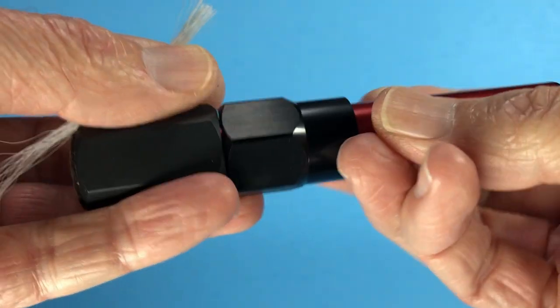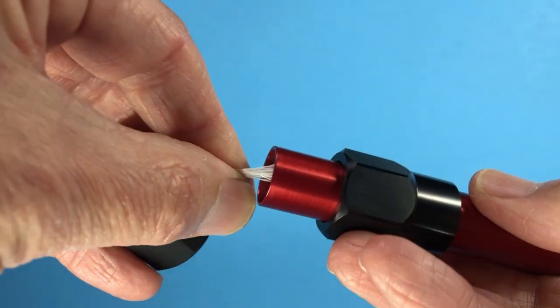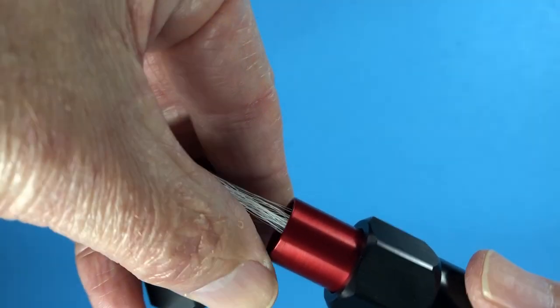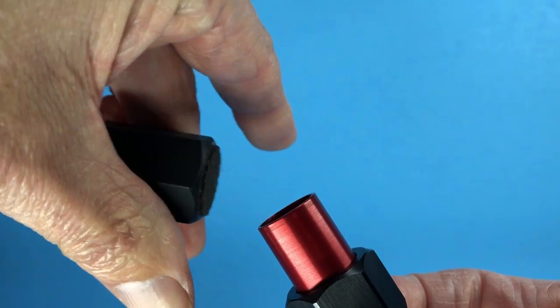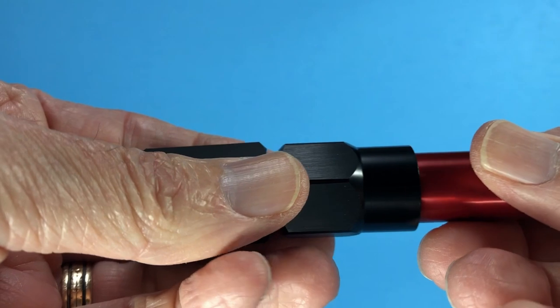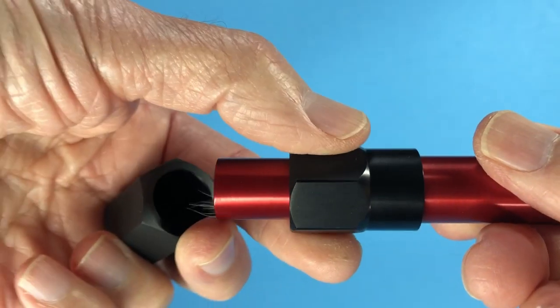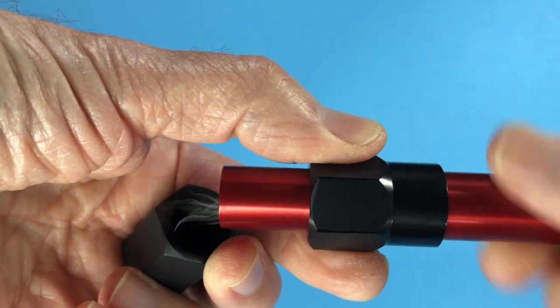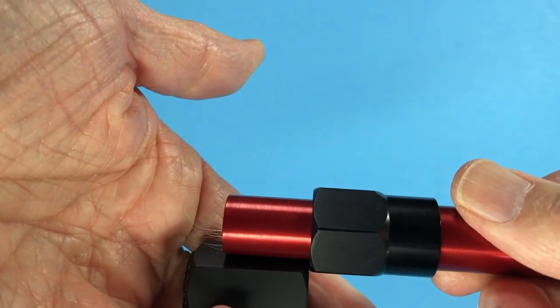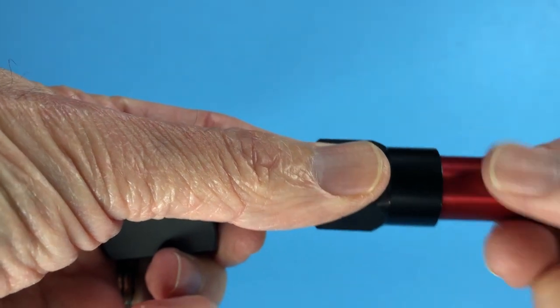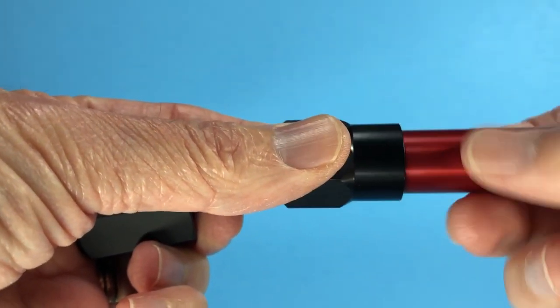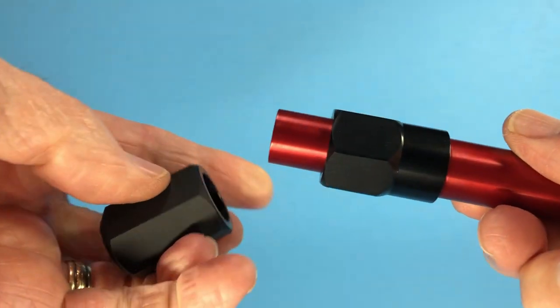And what's different about it is it's a closed-end stacker, so it's very easy to put the hair into this end. You simply slide it in, you put your cap on, and you stack your hair. What's nice about it is this particular screw adjustment will adjust the depth that this will go down into this cap. So you can adjust that distance for longer and shorter hair, which makes it really kind of handy.